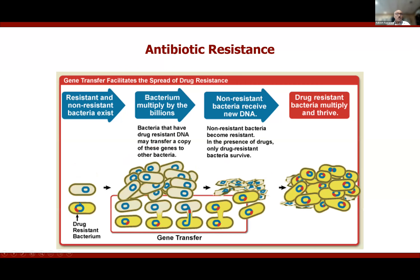Another mechanism is horizontal gene transfer. Only some bacteria may develop resistance mutations, and certain species are more prone to this. However, when different bacterial species exist in the same niche — such as the gastrointestinal tract — bacteria that have the resistance gene can pass it on to other species through conjugation. This leads to transfer of antimicrobial resistance from one pathogen to others, allowing them to thrive.